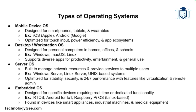Then we have desktop and workstation operating systems, designed for personal computers used in homes, offices, and schools. Examples include Windows, macOS, and Linux. These operating systems support a wide range of applications from productivity to entertainment and offer a user-friendly interface for multi-purpose computing. Then we have server operating systems, built for managing network resources, providing services to multiple users, and running 24/7. Examples include Windows Server, Linux server distributions like Ubuntu Server, and Unix-based systems.